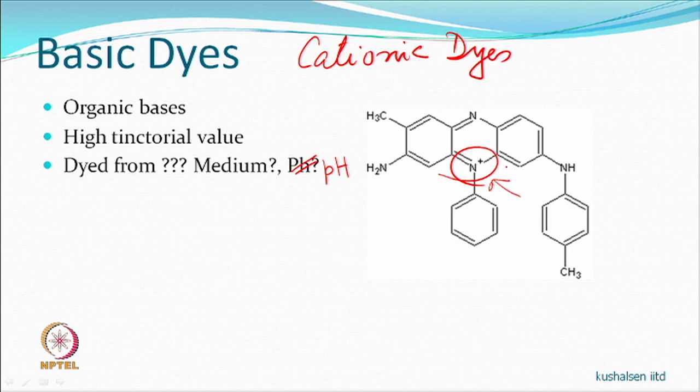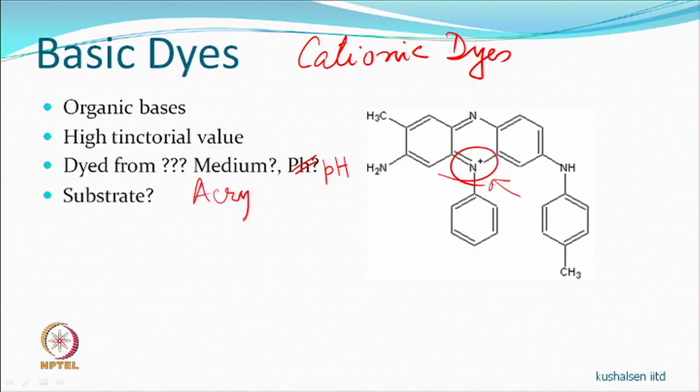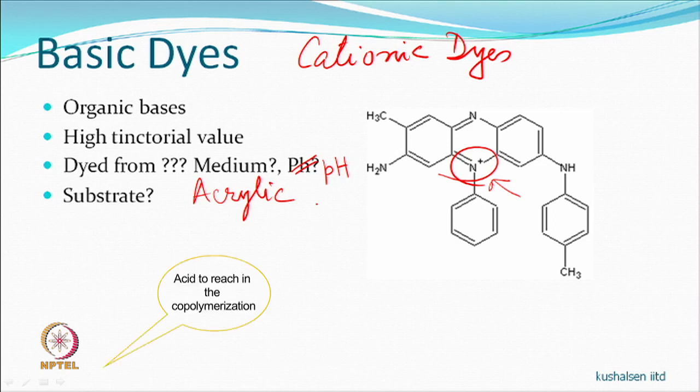Because cationic dyes are cationic, the anion comes from the acrylic substrate. The anionic part in acrylic fibre comes from acid co-monomers introduced during co-polymerization, or from initiators such as sulfites and bisulfites which remain attached at the chain ends during manufacture — this is how the negative groups are present in acrylic fibres.